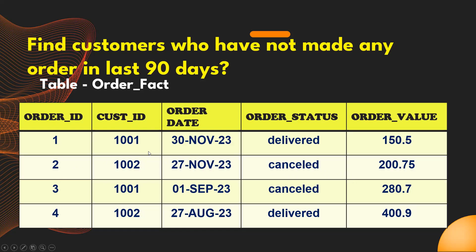In the table we have four rows with two customers — 1001 and 1002 — with multiple transactions. The assumption here is: if an order is placed but not delivered, we will not consider that as a valid order for that customer. For example, customer 1001 has an order on 30th November 2023, and today is December 5th, so it is within 90 days and is delivered — we cannot consider this customer.